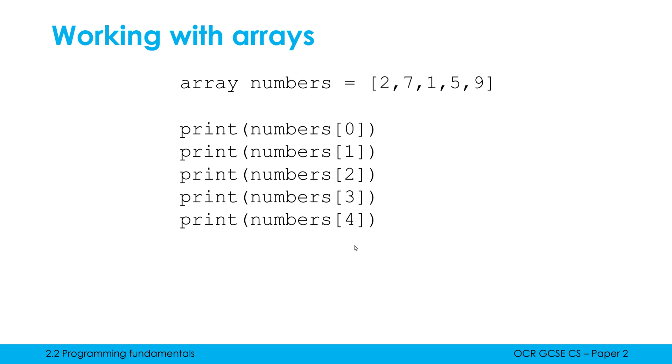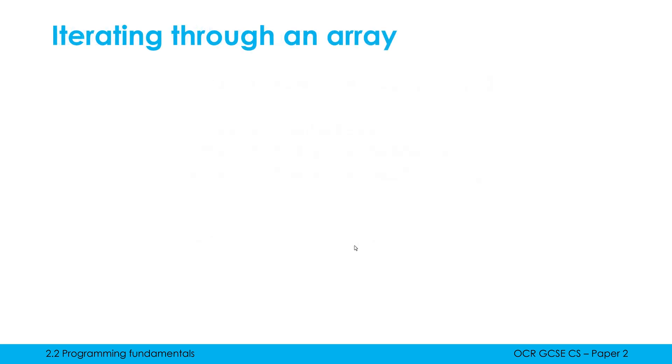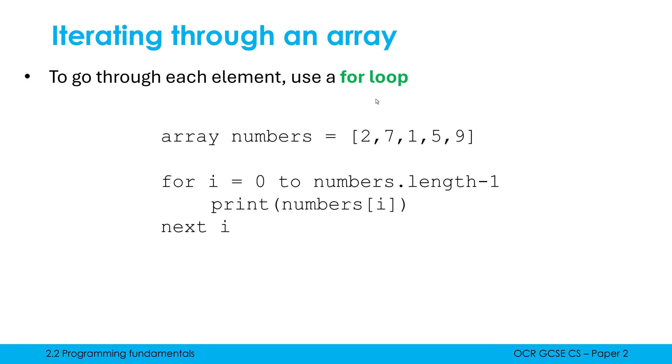We should not just be indexing each item one by one. We can make this a lot more efficient using iteration and specifically using a for loop. When we are iterating through an array, what that means is we're going through each element. Iterating through it means checking each element one by one. To do this, we use a for loop and there's a really standard for loop to learn.